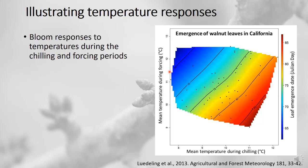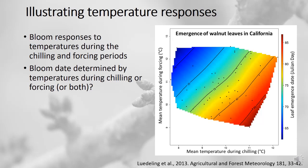For a cool chilling period and a warm forcing period, we get the earliest bloom dates on record. When the chilling period is warm and heat accumulation is particularly cold, we get a very late leafing date. This is what we expected, but it's nice to have it confirmed. The diagonal contour lines in this figure indicate that both temperatures during chilling and during forcing have an influence on bloom date timing.